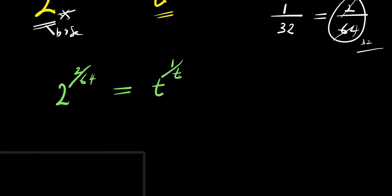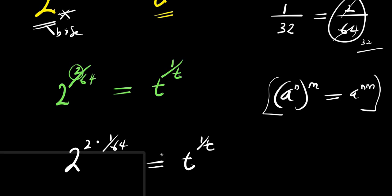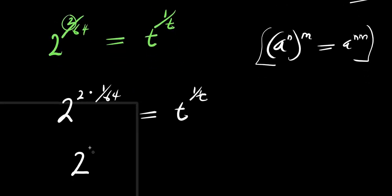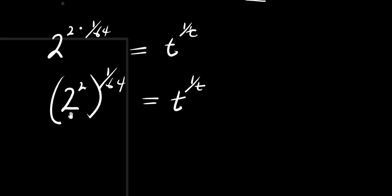So at this particular point, what I can do will be to factor out the 2 from the numerator. So I'm going to have 2 to the power of 2 times 1 over 64, and this equals t to the power of 1 over t. Going by the identity, a power n raised to the power of n equals a power n times n, I can simply have 2 to the power of 2, raised to the power of 1 over 64, and this equals t to the power of 1 over t. So 2 to the power of 2 is 4, so I have 4 to the power of 1 over 64, and this equals t to the power of 1 over t.